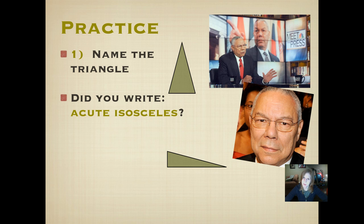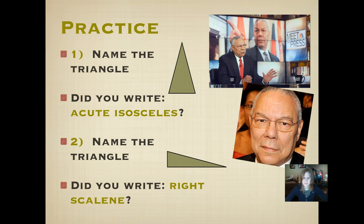An isosceles, remember, has two sides that are the same length. Let's try another one. Name this triangle using its sides and angles. Push play when you're ready. Did you write right scalene? This one looks a little bit different. It's slightly shaped differently, slightly different measures. But it's definitely got a right angle in it, and it definitely has sides of different lengths. So it's a right scalene.